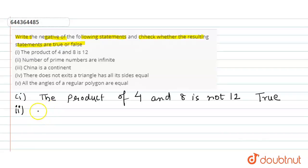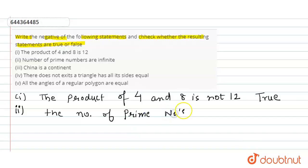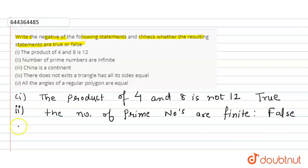Moving on to the second part: the number of prime numbers are infinite. So we can write the negation as: the number of prime numbers are finite. Let us check the validity — the number of prime numbers are not finite, they are infinite. So this negated statement is false.